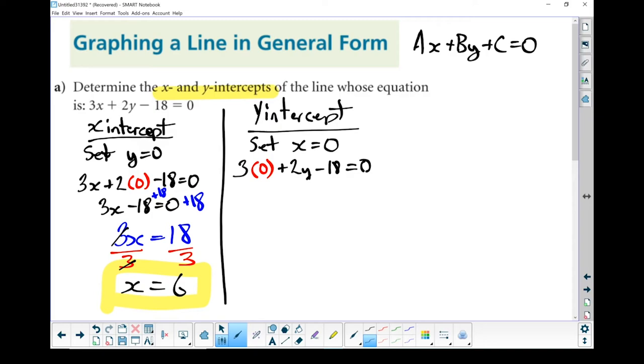All right, I'm going to rewrite that. 3 times 0 gives me 0. I'm not even going to bother writing that piece in. 2y minus 18 equals 0. I need to isolate the y, so I'm going to move the 18 to the other side.